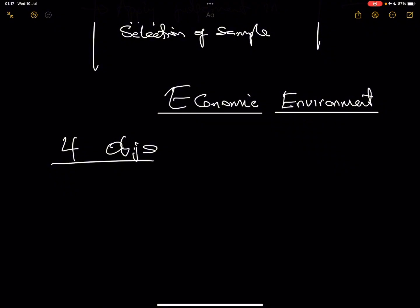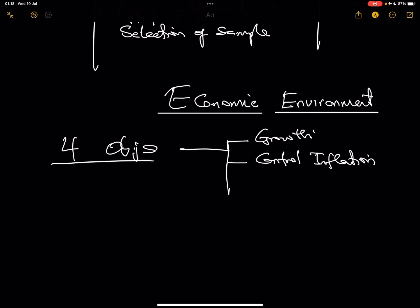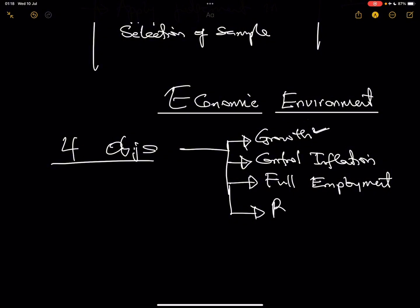Every economy has four key objectives. First, they want to grow the economy. However, sometimes growth gets out of control and becomes inflation, so every economy also wants to control inflation. A little inflation is good because it drives growth, but when it gets out of hand it must be controlled. Third, the goal is to achieve full employment — everyone with the qualifications and capacity to work should have a job.